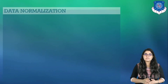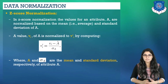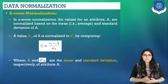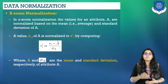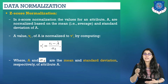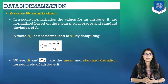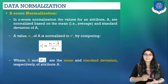Let's discuss the next method: Z-score normalization. The formula is VI' = (VI - Ā) / σ_A, where VI is the value we want to normalize, Ā is the mean value of attribute A, and σ_A is the standard deviation of attribute A. VI' is the normalized value after applying Z-score normalization. In Z-score normalization, the values for an attribute A are normalized based on the mean and standard deviation of attribute A.